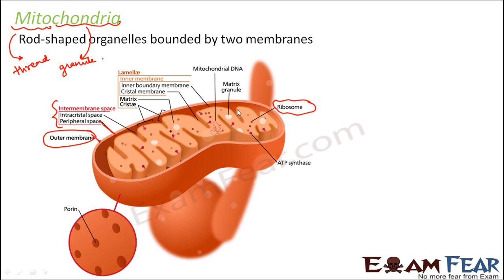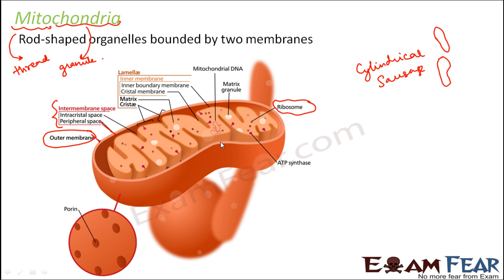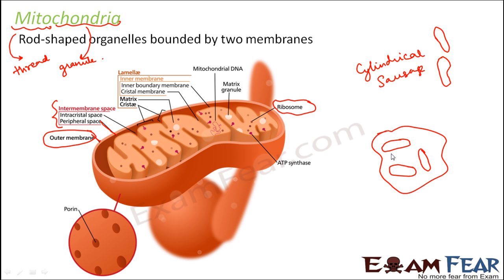The number can actually vary. If you talk about its shape, it is mostly cylindrical, and sometimes it is in the shape of a sausage. Generally, mitochondria are uniformly distributed in the cytoplasm — it is not the case that some areas have many mitochondria while other areas have none.